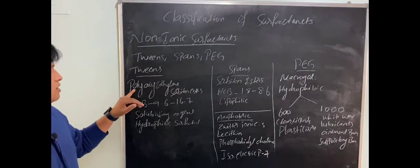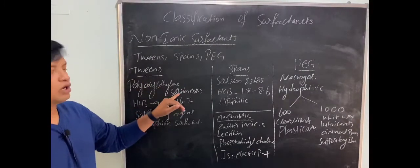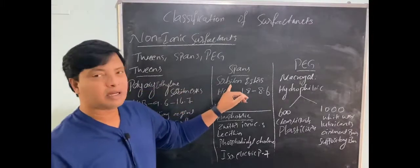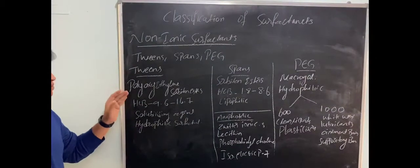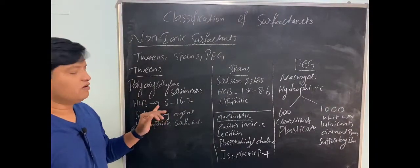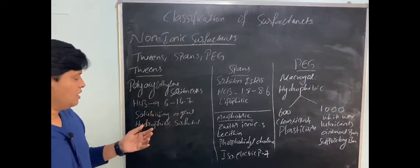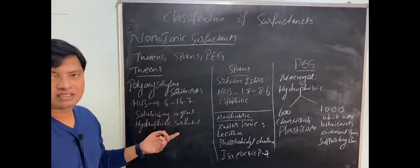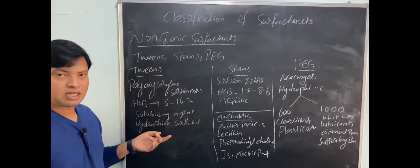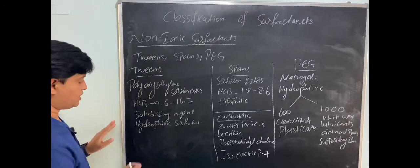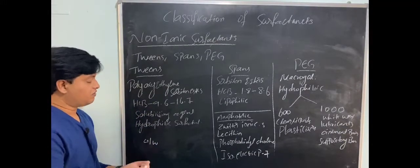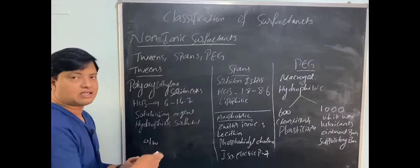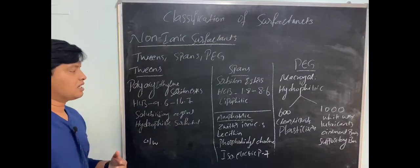Tweens and spans belong to the same family. Polyoxyethylene sorbitan esters are tweens, and plain sorbitan esters are spans. Tweens have HLB value ranging from 9 to 16. They are used as solubilizing agents. If you use tweens, you will get oil-in-water surfactant because they are hydrophilic and form water as a continuous phase.